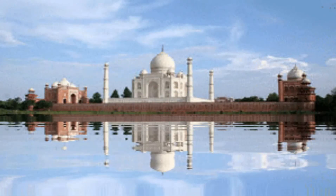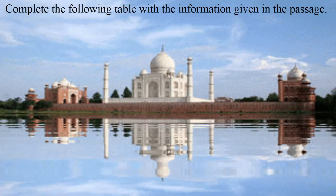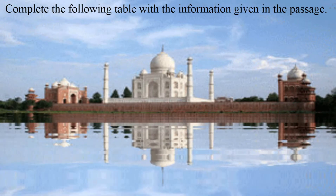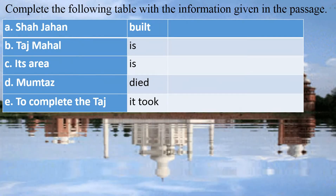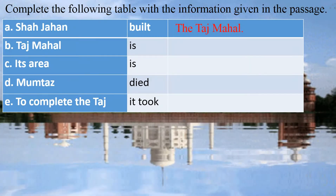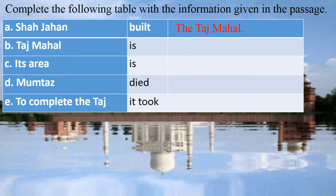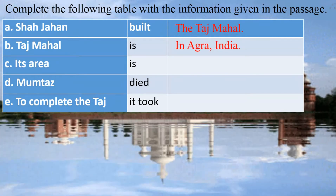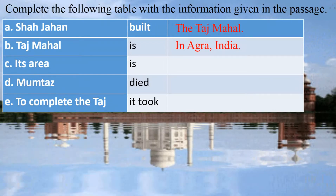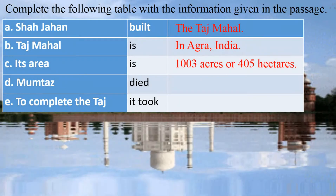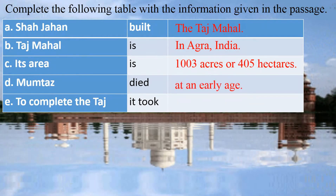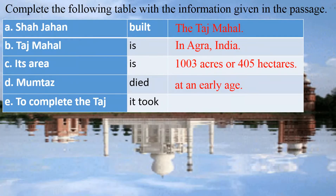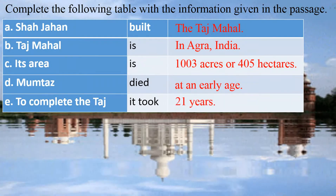Now complete the following table with the information given in the passage. The table is here. Number B: Taj Mahal is in Agra, India. Number C: Its area is 1003 acres or 405 hectares. Number D: Mumtaz died at an early age. Number E: To complete the Taj, it took 21 years.